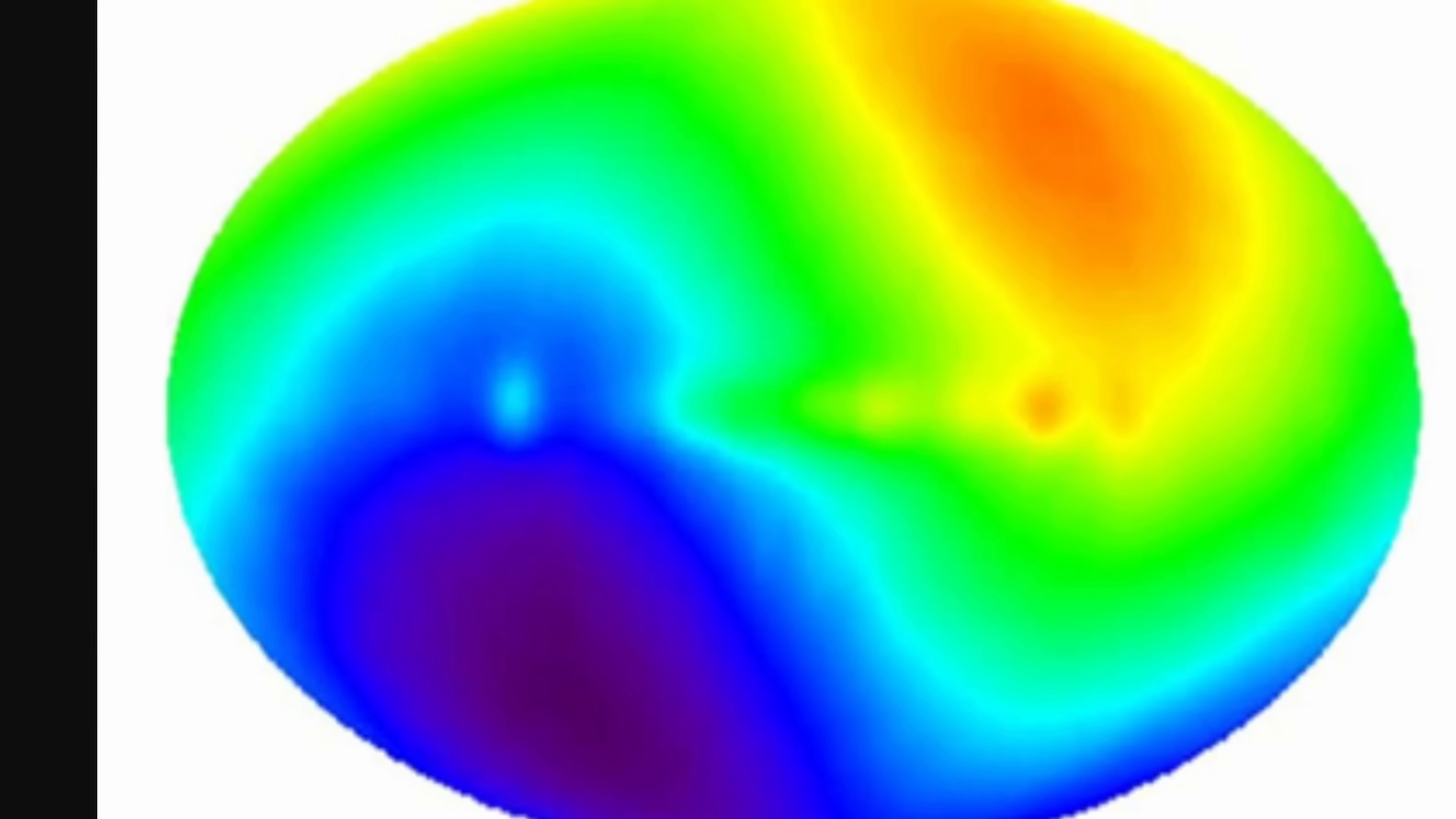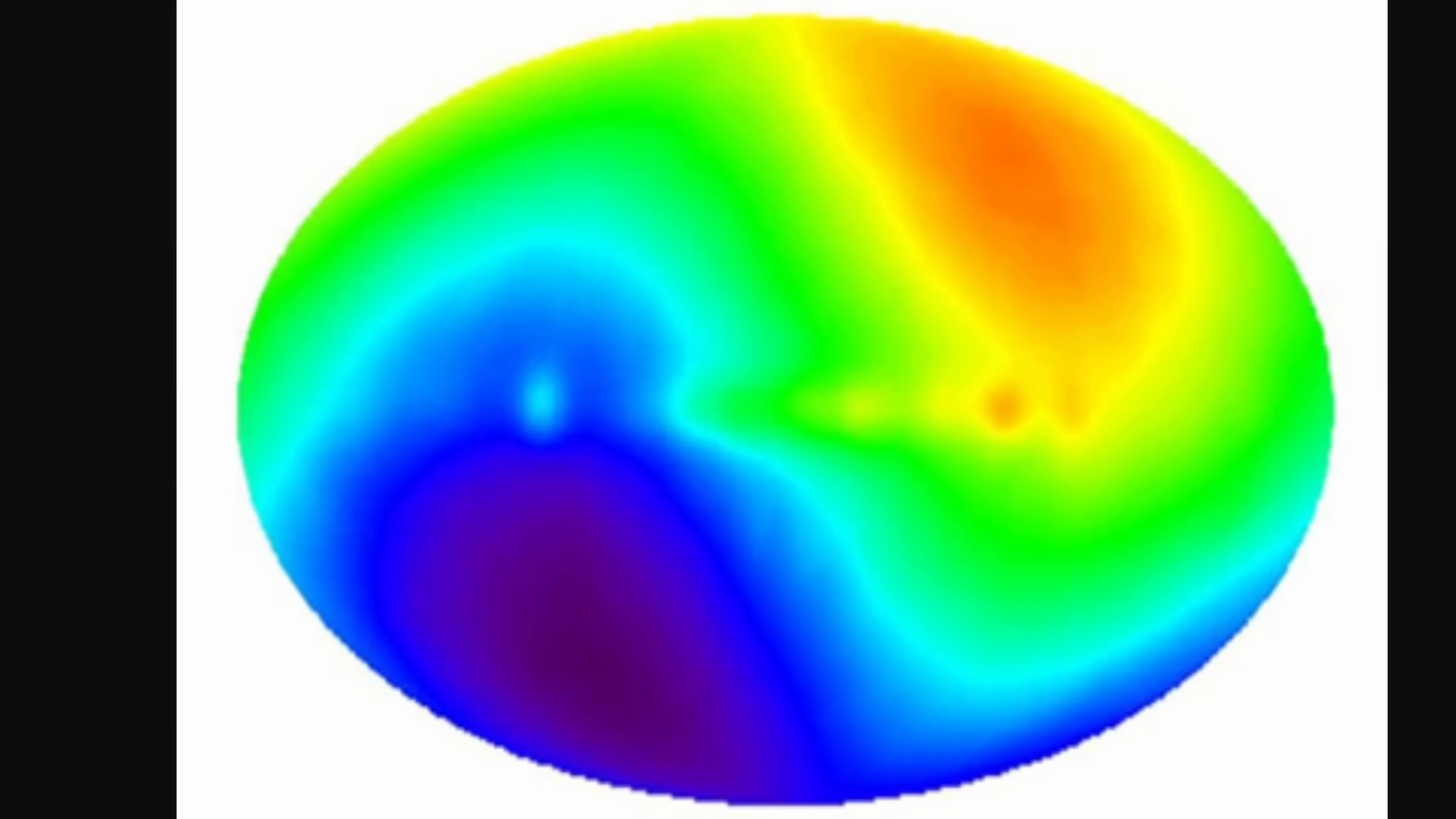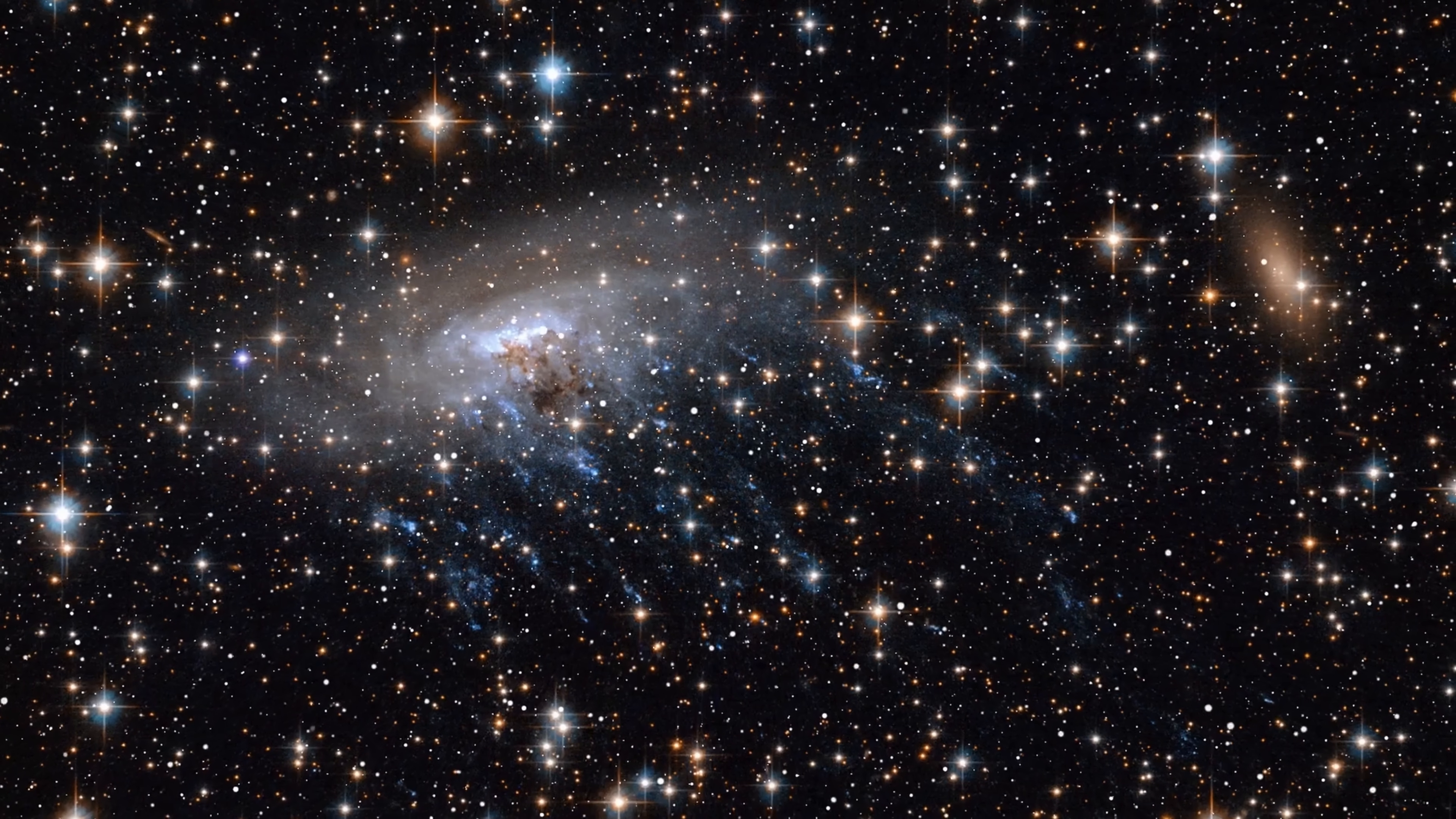Or just to rephrase this, does the CMB dipole align with the radio dipole? And if the cosmological principle is correct, the answer should be yes. The CMB dipole should be very similar to the radio dipole, or should be at least somewhat correlated. But for radio sources, this can only be done by counting distant galaxies.